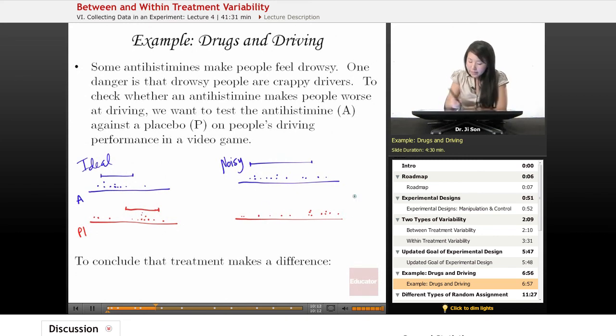In this case, it's hard to see if there is a between treatment difference, just because there's a lot of within treatment variability. That's what we mean by it being a bad kind of variability. It gets in our way of really being able to make conclusions from our experiment. What we want to do is reduce that within treatment variability as much as we possibly can.